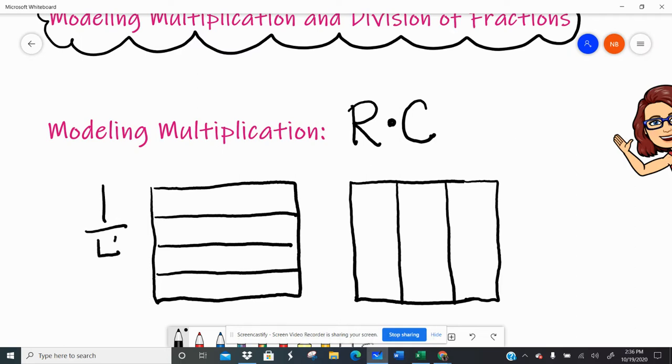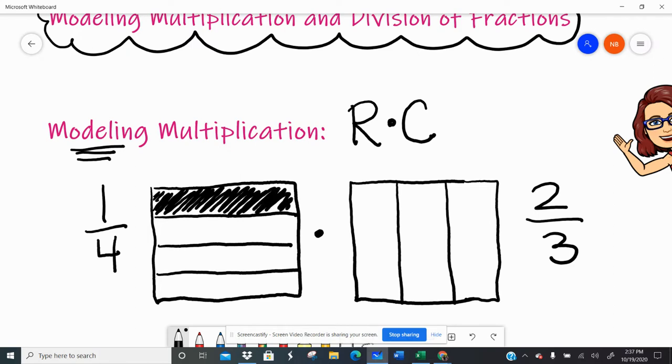So say we have like one fourth times two thirds. Well, when I model something, that's a picture. I'm taking a picture of something. So I'm going to show the fraction one fourth. Well, let's just like color it. Let's do the highlighter. All right, we'll just color in black. It's fine. All right, so one fourth. If I colored one out of four rows, that shows the fraction one fourth. We can agree.